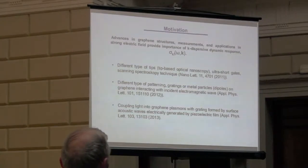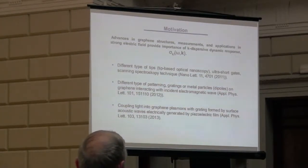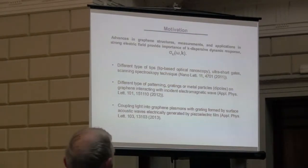Examples include tip-enhanced spectroscopy, scattering-type scanning near-field optical microscopy, and different types of patterns due to technology achievements, such as gradients or metal particles, which are diagrams of graphene interacting with electromagnetic waves. And at last, an interesting example demonstrated recently is coupling light into graphene platforms with optical gradients.